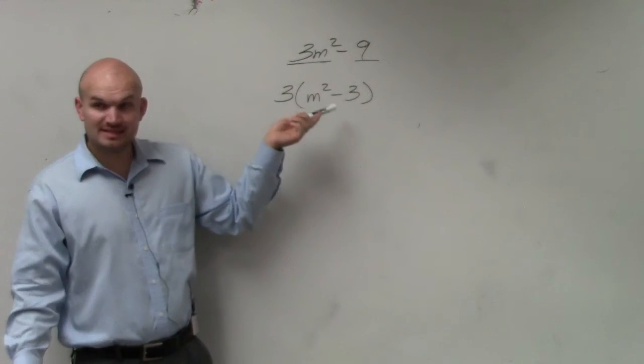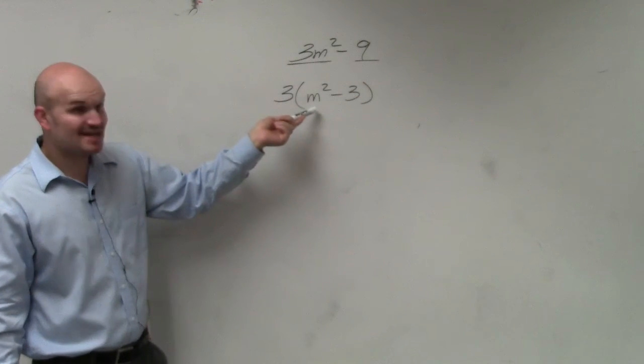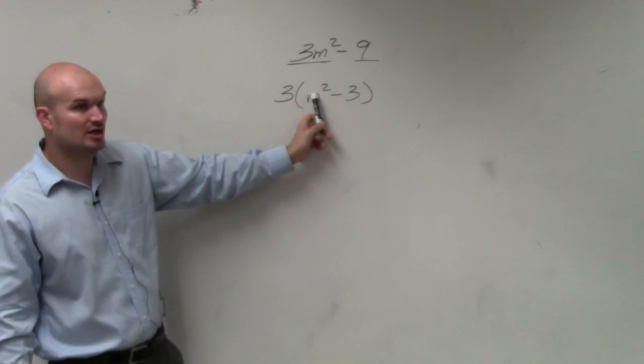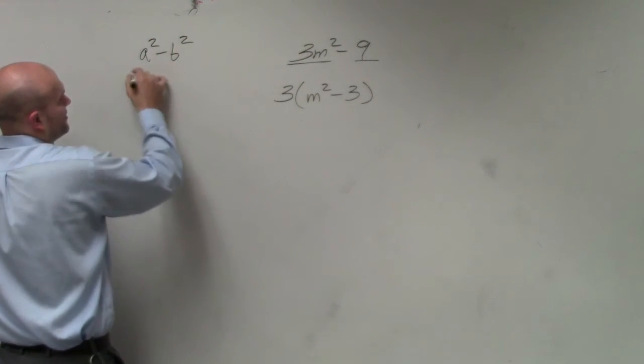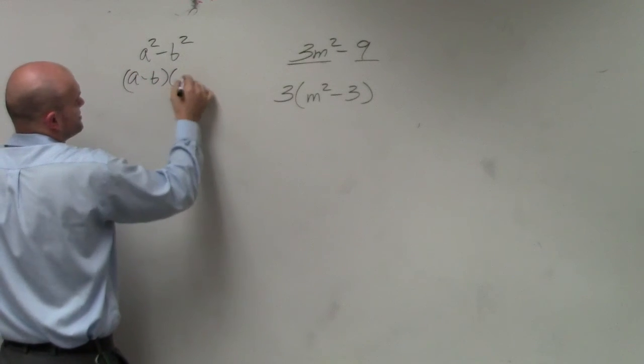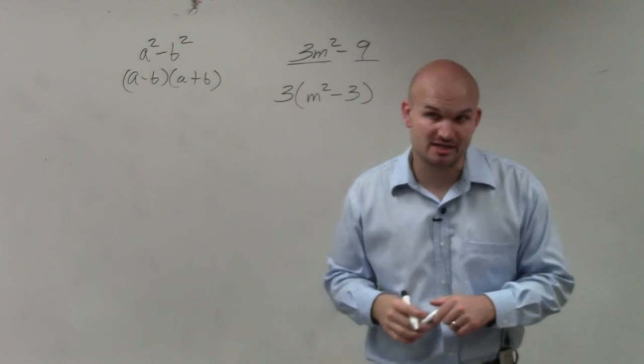Now, you always want to see, can you further factor this down? And this might be enticing, because you can see a squared term minus another term, where it looks like a squared minus b squared, right? Which is a difference of two squares, which is a special product or special factoring technique that we use.